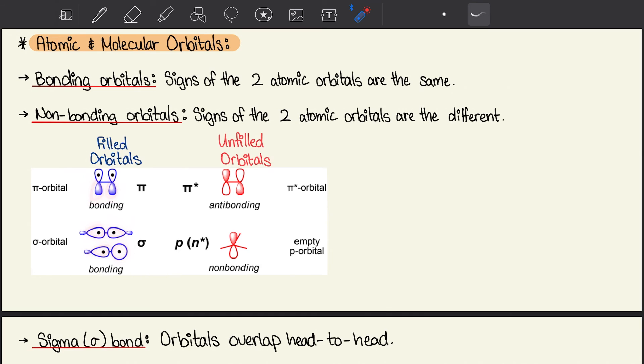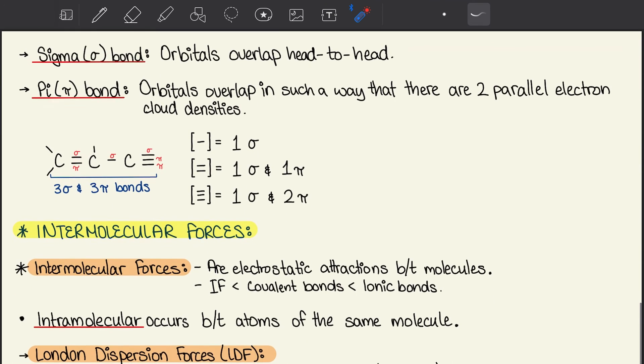With sigma bonds, orbitals overlap head to head, and pi bonds have orbitals that overlap in such a way that there are two parallel electron cloud densities. The example below shows how to calculate the number of sigma and pi bonds in a given molecule. The first bond will always be a sigma bond, and any additional bond will be an addition of a pi bond. So a single bond is one sigma. Two bonds is one sigma, one pi. And a triple bond is one sigma and the addition of two pi bonds. The first bond is always sigma. Any addition after that will be an addition to the pi bonds.